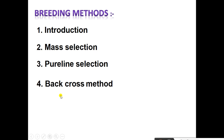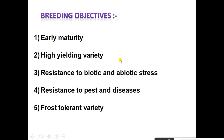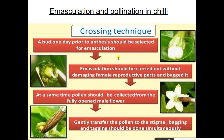Breeding methods in chili: first, introduction; second, mass selection; third, pure line selection; and fourth, backcross method. Breeding objectives: early maturity, high yielding variety, resistant to biotic and abiotic stresses, resistant to pests and diseases, frost tolerant varieties.